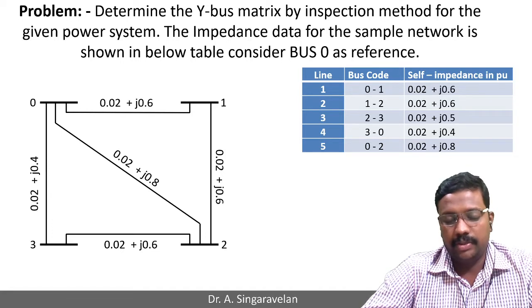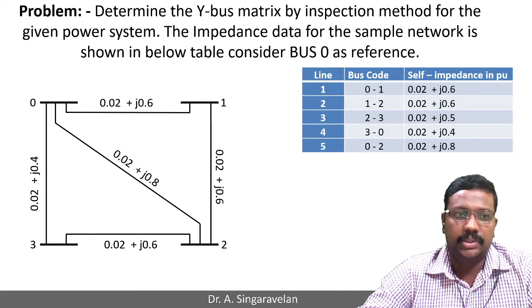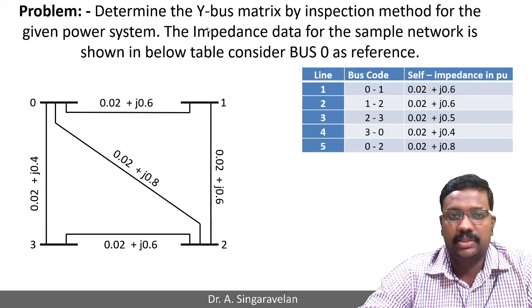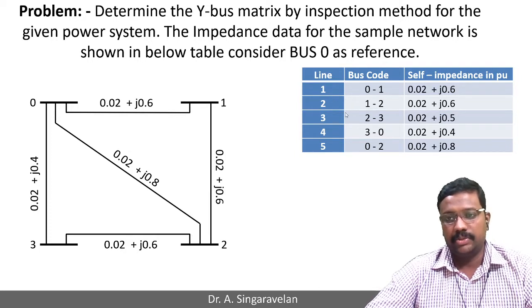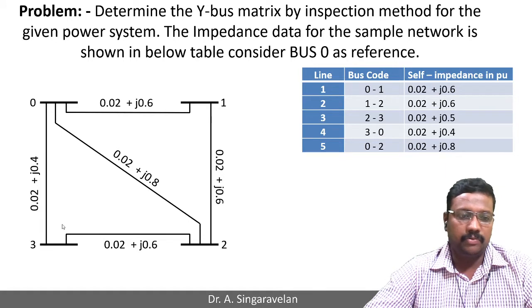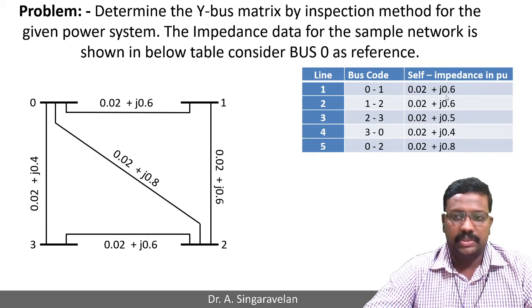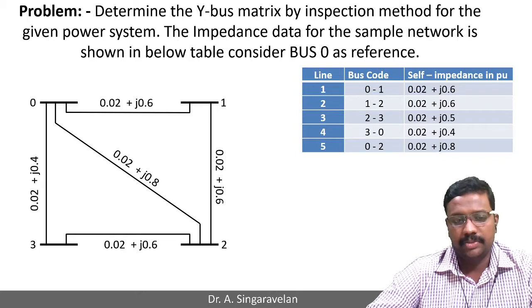Suppose a problem is given to find the Y-Bus matrix by inspection method. Here, one problem is given: determine the Y-Bus matrix by inspection method for the given power system. The impedance data for the sample network is shown in the table below; consider bus 0 as the reference. The network is a 4-bus system where bus 0 is the reference, and buses 1, 2, and 3 have different lines. Between bus 1 and 2, for example, the self-impedance is 0.02 + j0.6, and similarly for all other lines.